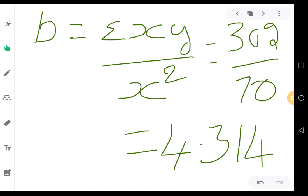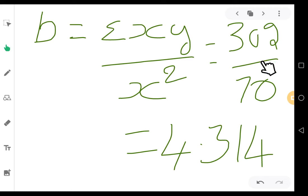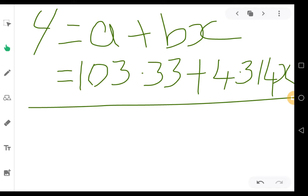Then calculate b. The formula for b is summation xy by x square. From the table, summation xy is 302 and x square is 70. Therefore 302 by 70 gives b equals 4.314. Now we have a and b values, so write the linear equation: y equals a plus bx, which is 103.33 plus 4.314x.